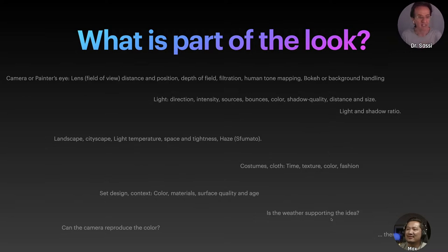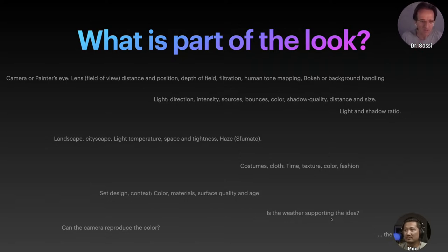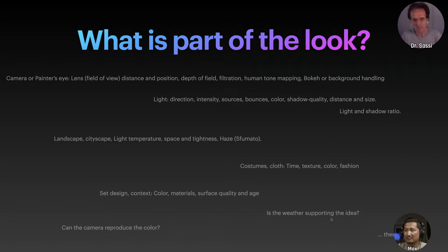What is part of the look? The camera — or the painter's eye. Lens and field, distance, position, depth of field, filtration, human tone mapping. Or the bokeh — depth of field is not bokeh. Bokeh is what we have in terms of specific lenses, like daguerreotype and so on. And light — very important. This is, for me, always the soul of the picture when you take the actors in first position. Directing the light, the intensity, the bounces, the color, the shadow quality, the distance and the size, light and shadow ratio — all of that. That plays into color grading. If the lighting is not well done, you may have problems getting what you want in terms of look.